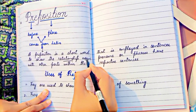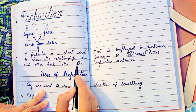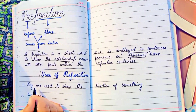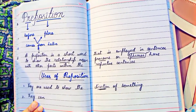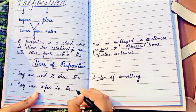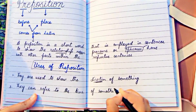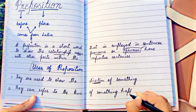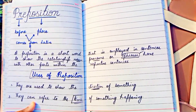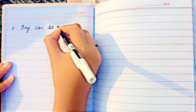What is the relationship showing nouns, pronouns, and phrases? What is the relationship with the other parts of the sentence? Now, the uses of preposition: number one, they are used to show the direction of something. Number two, they can refer to the time of something happening. Number three, they can be used to denote the position or location of an object in a sentence.